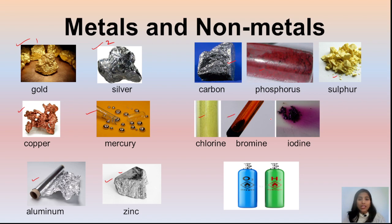Carbon is a very important non-metal. Chlorine, bromine, and iodine are also non-metals. Oxygen and hydrogen are non-metals in gas form. The rest you will see here in solid form. There are some exceptions among non-metals and metals.